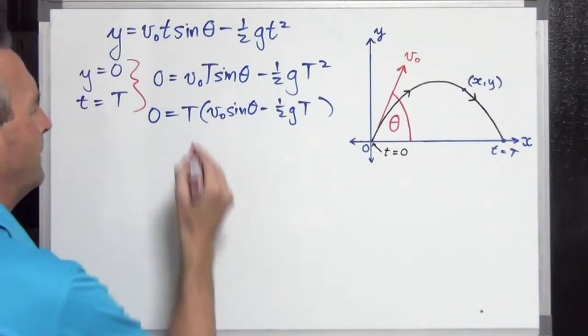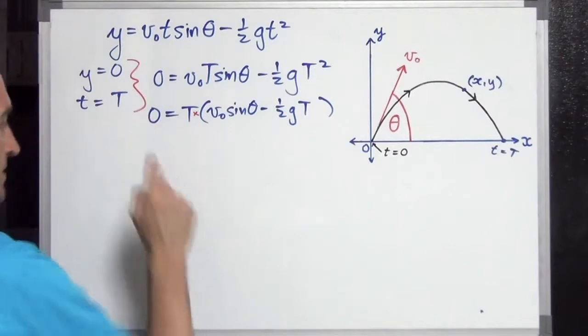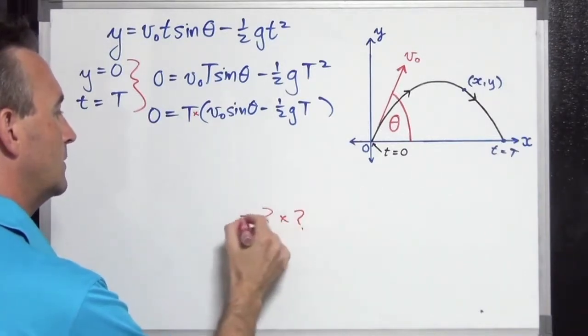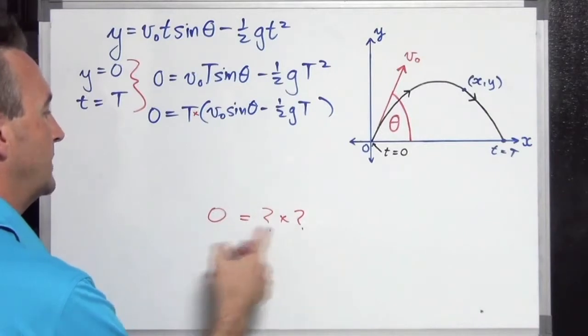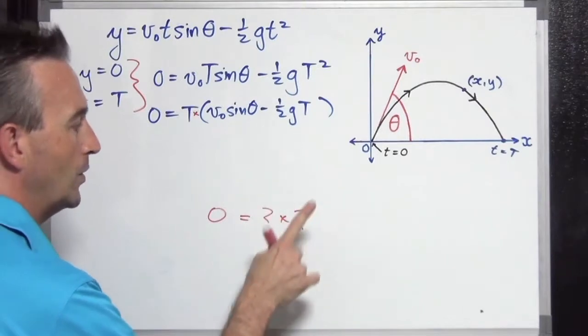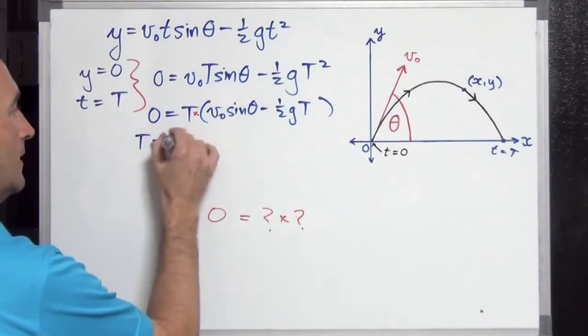Now, what we have is this times this equals this. We have our multiplication property, our product property. One thing times another thing giving zero. If you're unfamiliar with that rule, we've got something times something equaling zero. Something times something equaling zero means this must be zero or this must be zero. So we can say this must be zero or this must be zero.